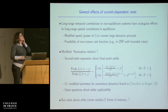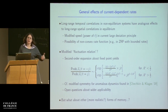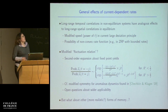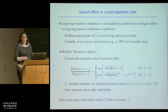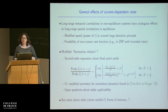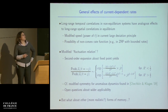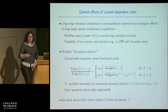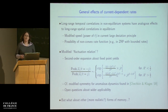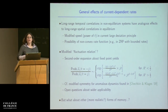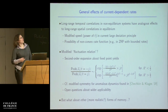Before finishing the first part, let me make some general comments about the effects of current-dependent rates seen in this model and in other work. Long-range correlations in time in non-equilibrium systems have somehow similar effects to long-range correlations in space in equilibrium. You can see a modified speed — in this case a modified power of T in the large deviation principle. You also have the possibility of a non-convex rate function, analogous to the non-concave entropy seen in equilibrium systems with long-range spatial correlations.